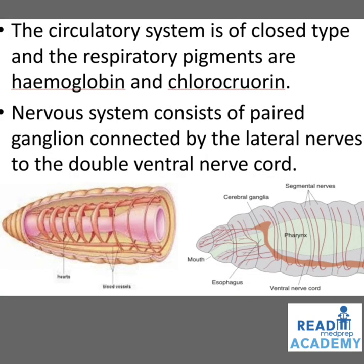The circulatory system is of closed type and the respiratory pigments are hemoglobin and chlorocruorin. The nervous system consists of paired ganglia connected by lateral nerves to the double ventral nerve cord. In the image on the left side you can see the lateral hearts and blood vessels. On the right side you can see the mouth, esophagus, pharynx, central ganglia, and the ventral nerve cord giving rise to segmental nerves.